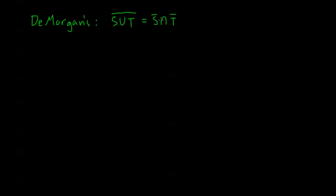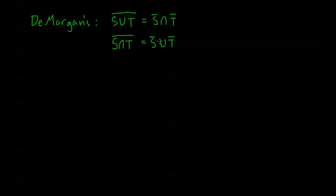So we're switching again, just like with propositional DeMorgan's. For S intersection T — meaning everything that's in both — the complement is going to be everything that's not in both, or everything that's not in S or is not in T: everything in S complement union T complement. So those are DeMorgan's laws.